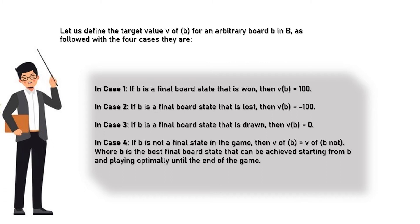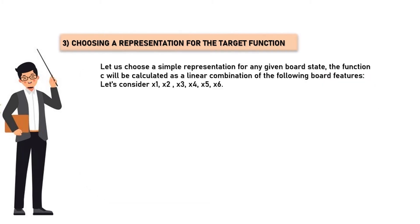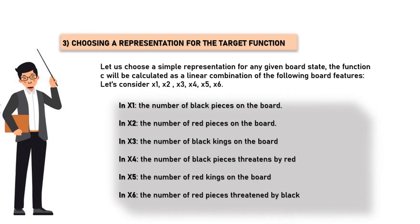Three: choosing a representation for the target function. Let us choose a simple representation. For any given board state, the function will be calculated as a linear combination of the following board features. Let's consider x1, x2, x3, x4, x5, x6. In x1, the number of black pieces on the board. In x2, the number of red pieces on the board.